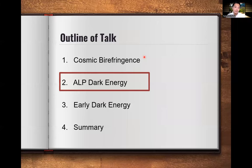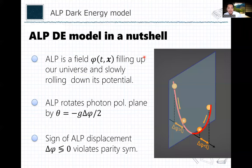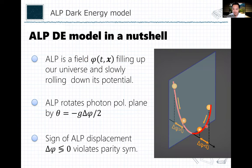Axion-like particle dark energy. Let me explain the axion-like particle model in a nutshell. Let's consider an axion-like particle — a pseudo-scalar field coupled to a photon — and I will show that if this field slowly rolls down its potential, for example from one side to the other with a non-zero displacement delta phi...